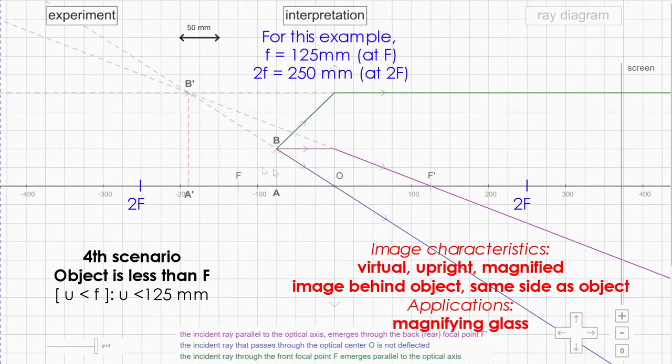So let's repeat the whole thing again. When the object is less than focal length, or less than f, the image will be upright, virtual, and magnified.